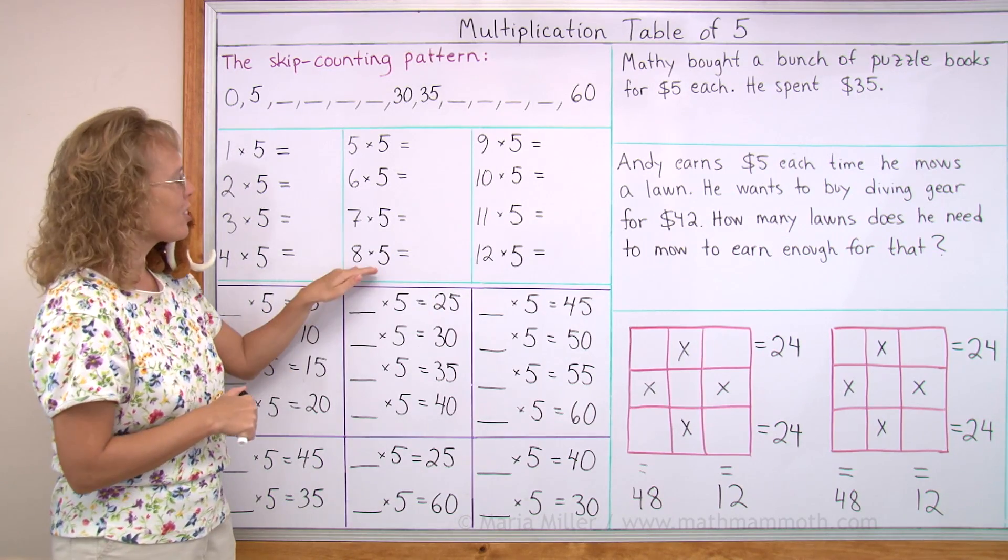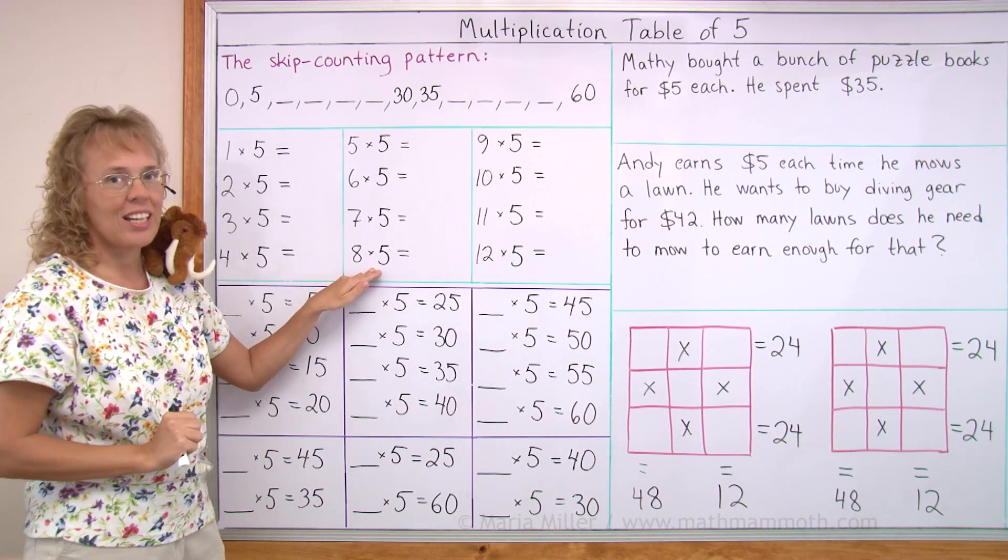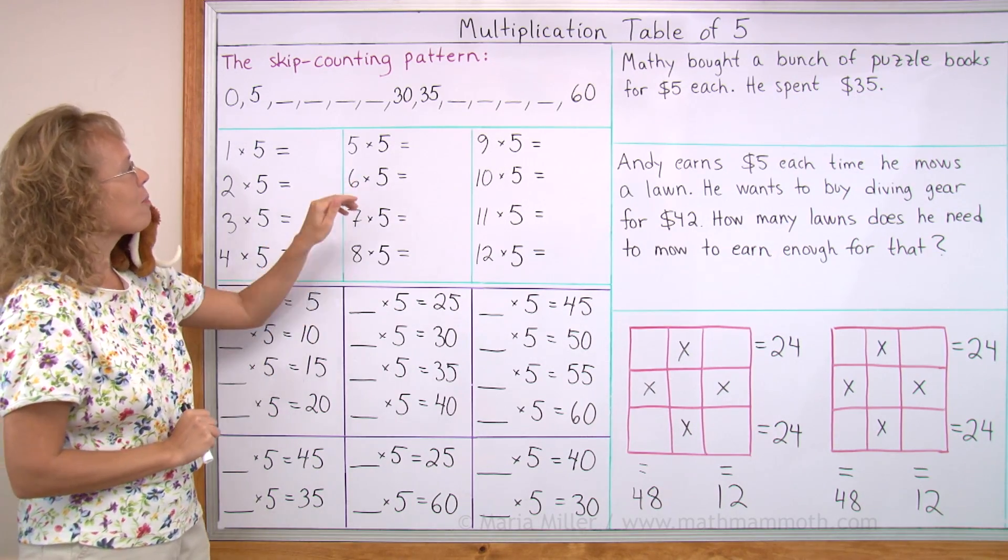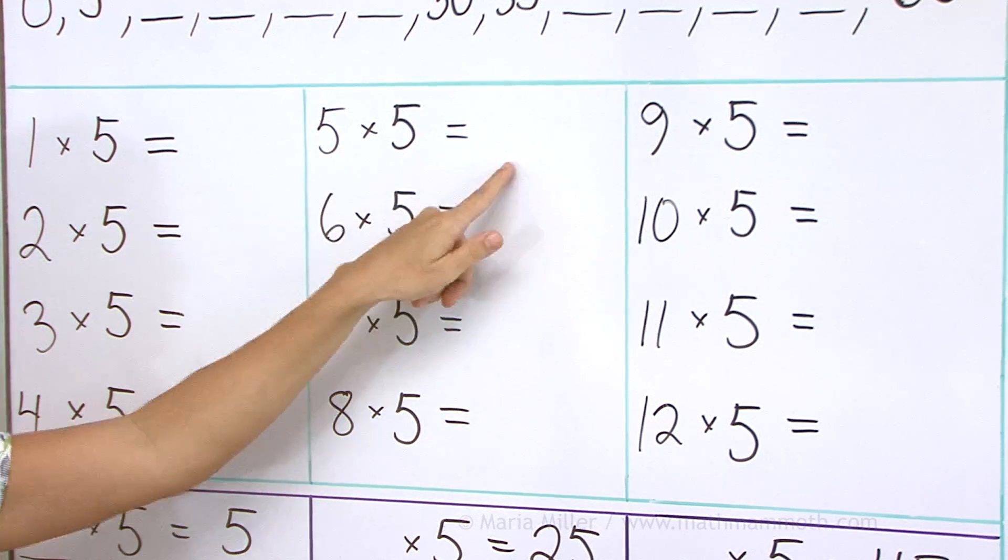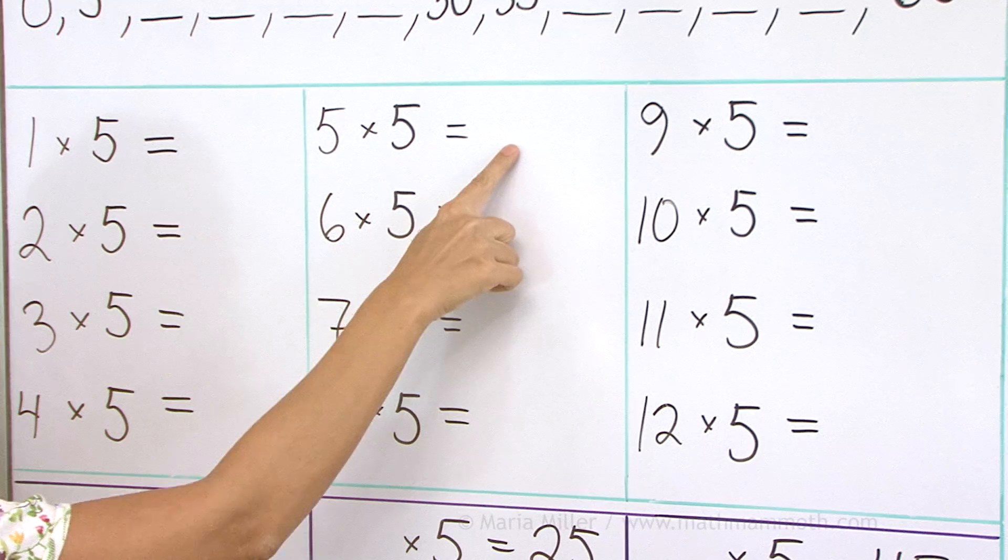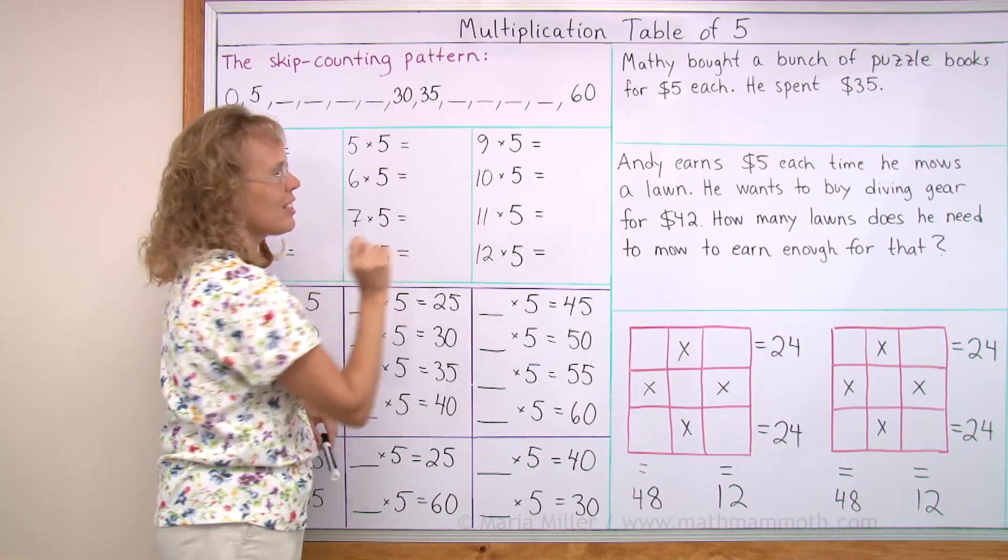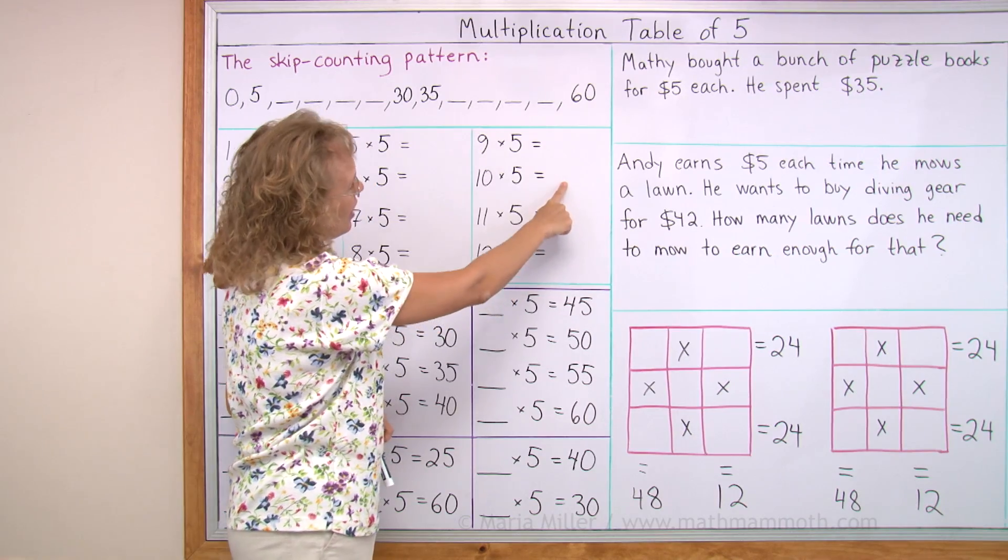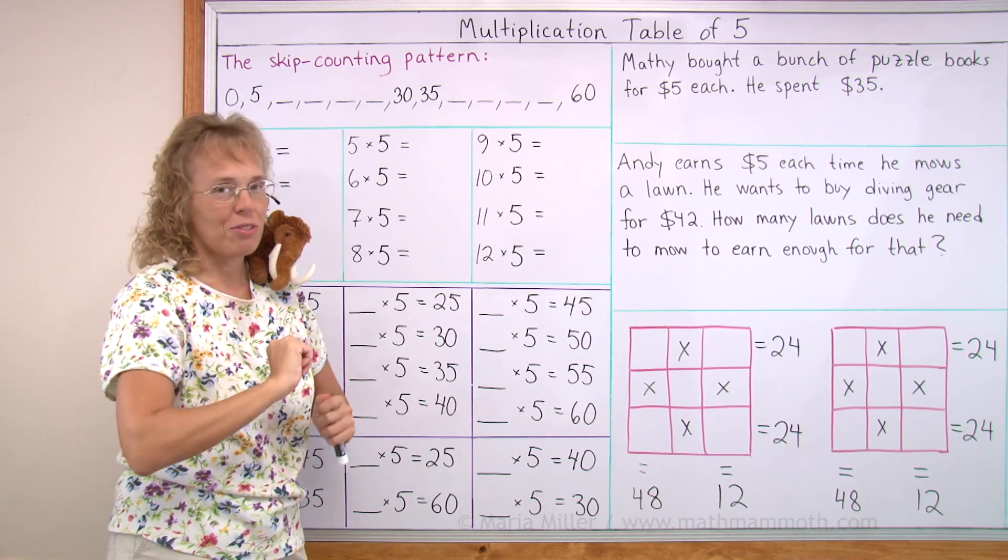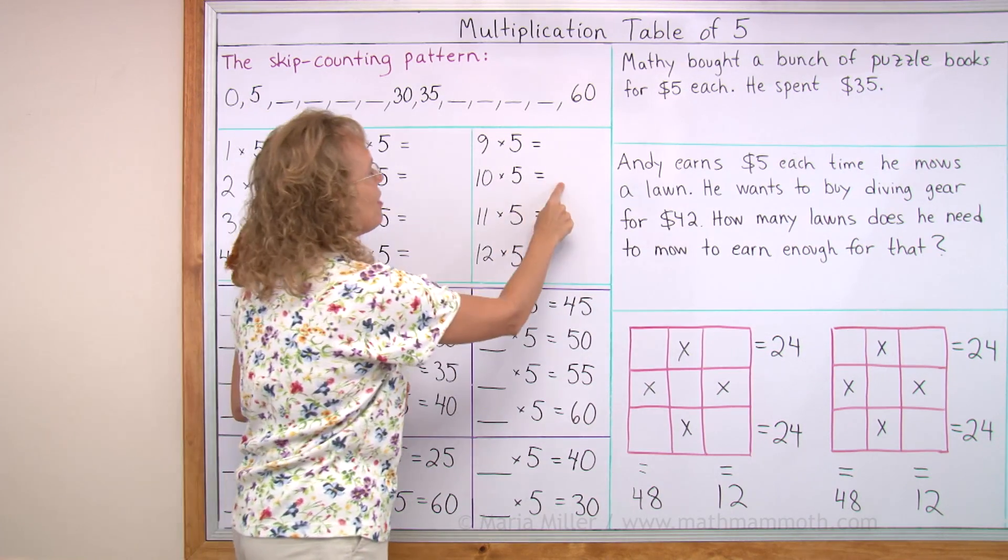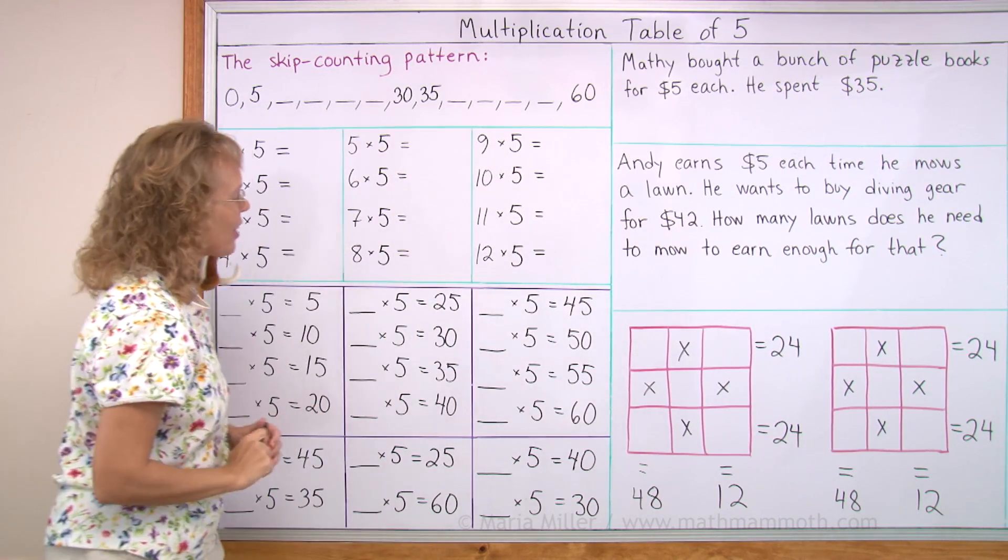And that is because each answer here in the table of 5 is exactly half of the corresponding answer in the table of 10. It also would work here: 5 times 5, go 5 times 10, 50, take half of that, 25. Over here the answers are 25, 30, 35, and 40, 45 and 50. Now 50 is an easy one. 10 times 5 is 50, so 9 times 5 is just one 5 less than 50, 45. And 11 times 5 is 55, and then 60.